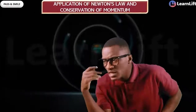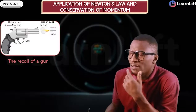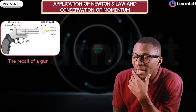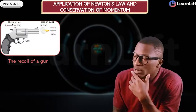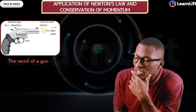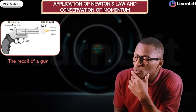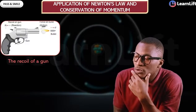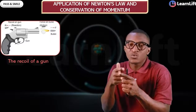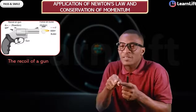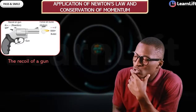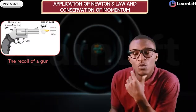The first is the recoil of the gun. Looking at the image, to make this gun move, you pull the trigger backward and the bullet goes forward. The action is from the bullet going forward, and the reaction comes from the trigger. Action and reaction are equal but they are moving in opposite directions.